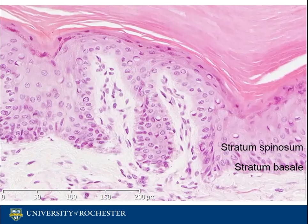The majority of the cellular epidermis is typically composed of the stratum spinosum. The stratum spinosum has several layers of cells, and you may appreciate that the cells in this layer are attached to one another by desmosomes, which appear as fine spiny bridges.